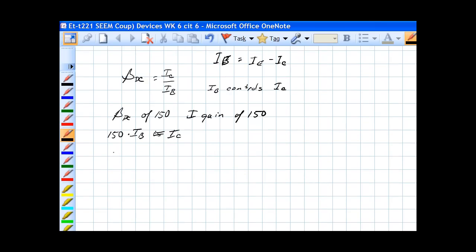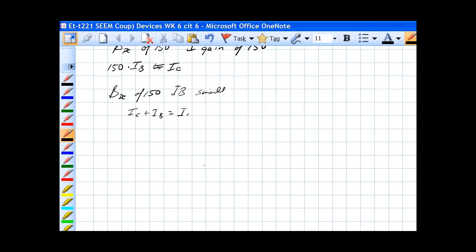Something to note also is that if I have a beta DC of 150, then the base current IB is so small that IC plus IB equals IE. If the base current is so small relatively, IC is approximately equal to IE.